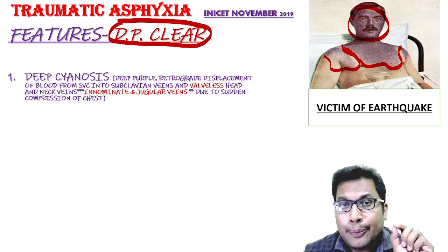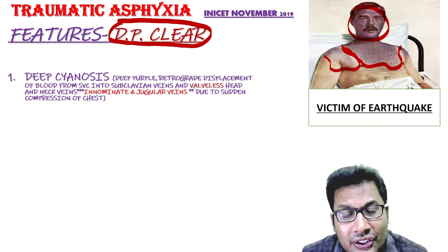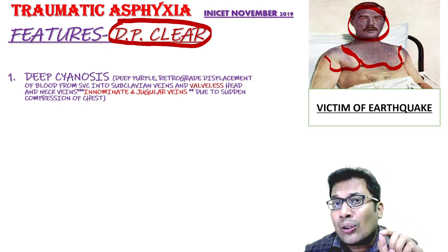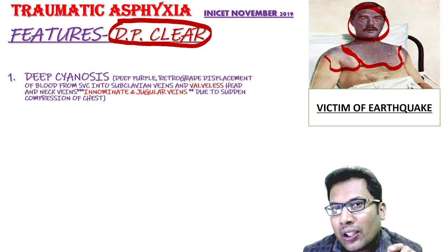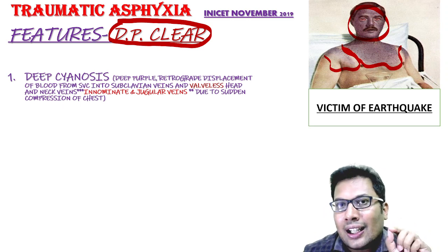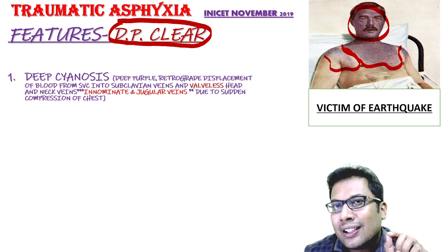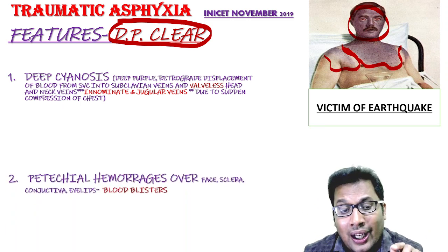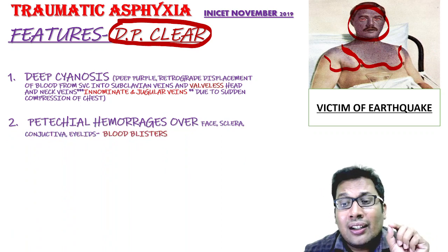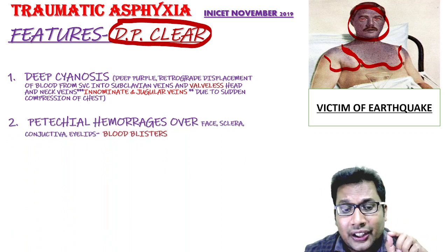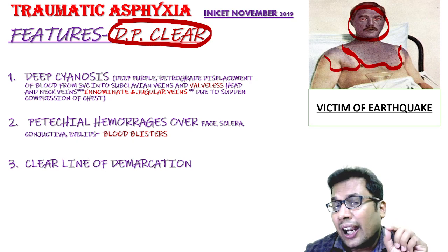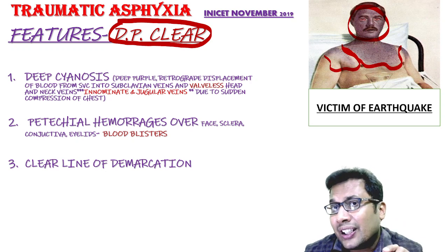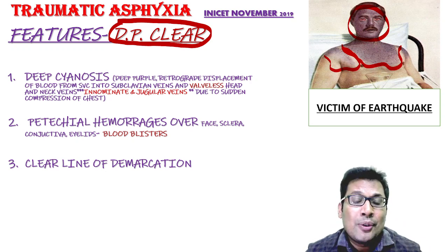The second point is petechial hemorrhages, also known as blood blisters. They are commonly seen over the face and chest. And there is a clear line of demarcation between the injury and the compressed area.